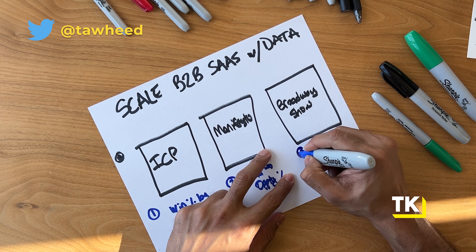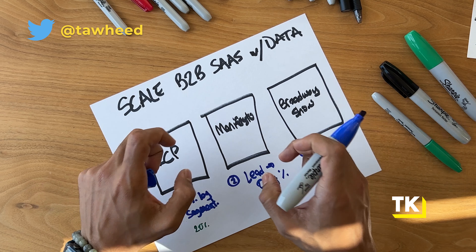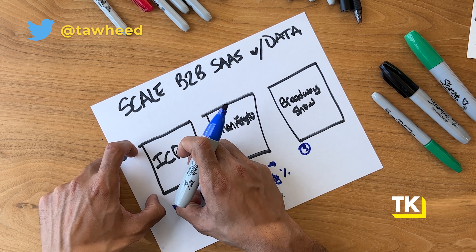Now let's go to principle number three and metric number three that's going to help you scale. Principle number three: with the Broadway show, just to reiterate — the Broadway show is a consistent set of sales and marketing activities that you're running to bring your manifesto and your message to your ICP. This could be on LinkedIn, Twitter, Facebook ads, Google — there are so many different channels. But it's a consistent set of activities done in a consistent way. That's why we call it a Broadway show.